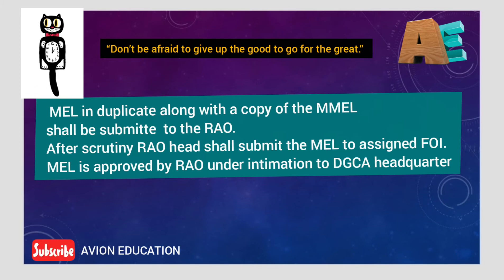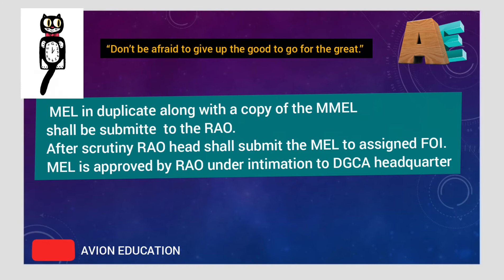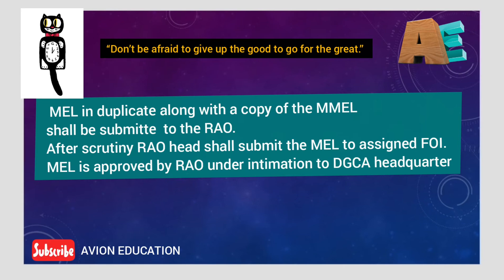When forwarded to REO, the REO will check the airworthiness point of view, and after checking, will forward it to FOI. The FOI will check if any excess crew load will occur because of these MEL items and will assess the operational point of view. If everything is fine, the copy will be approved by REO under intimation to DGCA Headquarter DAW.